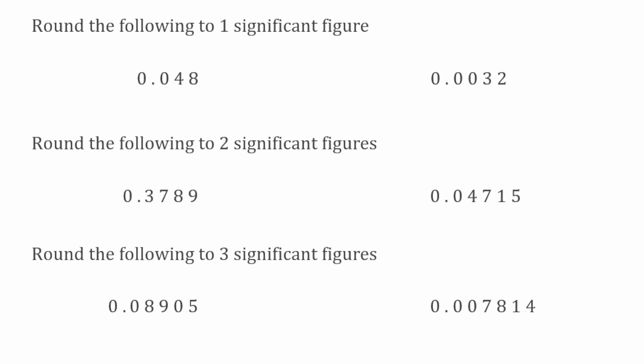To find the first significant figure we're going to look for that first non-zero digit, which in this first example would be four. We draw our line between this and the next digit, which is an eight. We look at the digit to the right of our line — because it's an eight we're going to round up the four to a five. Writing underneath in the same columns: 0.0, and then our four rounds up to a five. The answer to that first one is 0.05.